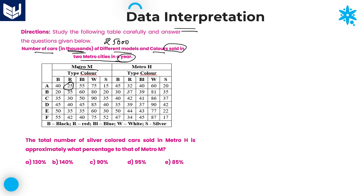Similarly Metro H. Total how many colors do we have? Total five colors: black, red, blue, white, and silver. These are the five different colors available across two different metro cities. The models are A, B, C, D, E, and F — six models total, five different colors, two metro cities.